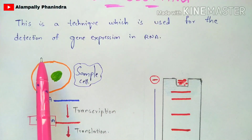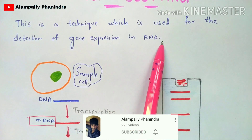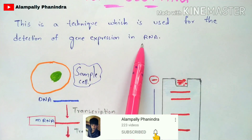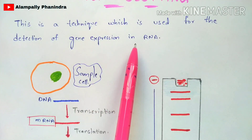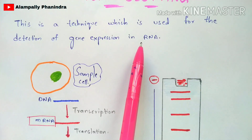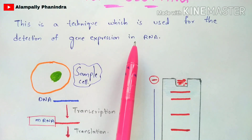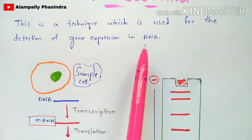Northern blotting is a technique used for the detection of gene expression in RNA. In the case of southern blotting, it is mainly used for the detection of DNA, whereas in the case of western blotting, it is mainly used for the detection of proteins.